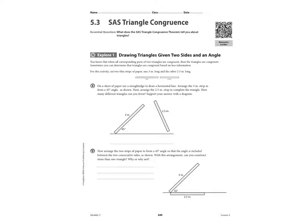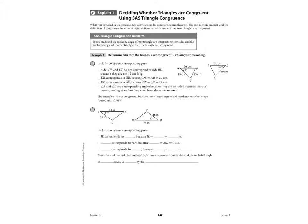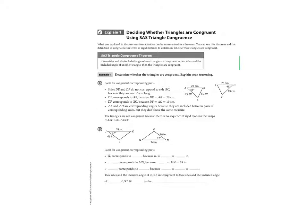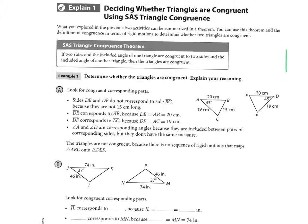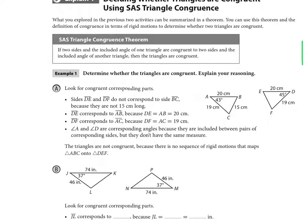And now we're going to do side, angle, side in 5.3. So if you turn to page 247, and we look here at the top, side, angle, side, if two sides and the included angle of one triangle are congruent to two sides and the included angle of another triangle, then the triangles are congruent.